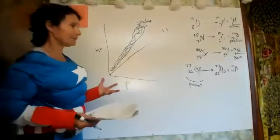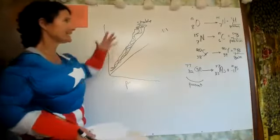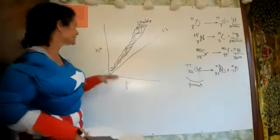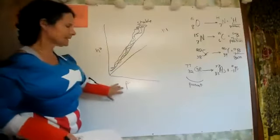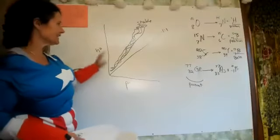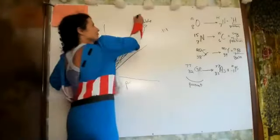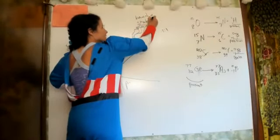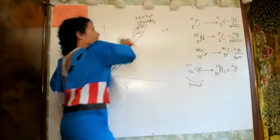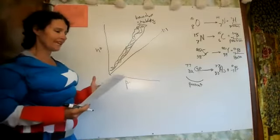Radioactivity is about the ratio of neutrons to protons. When you're not in the band of stability, you're going to go through decay.